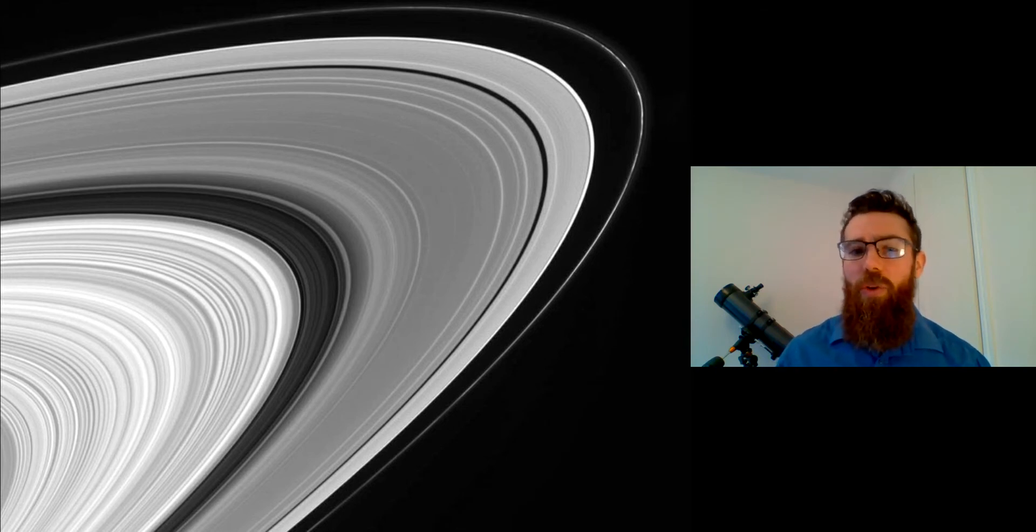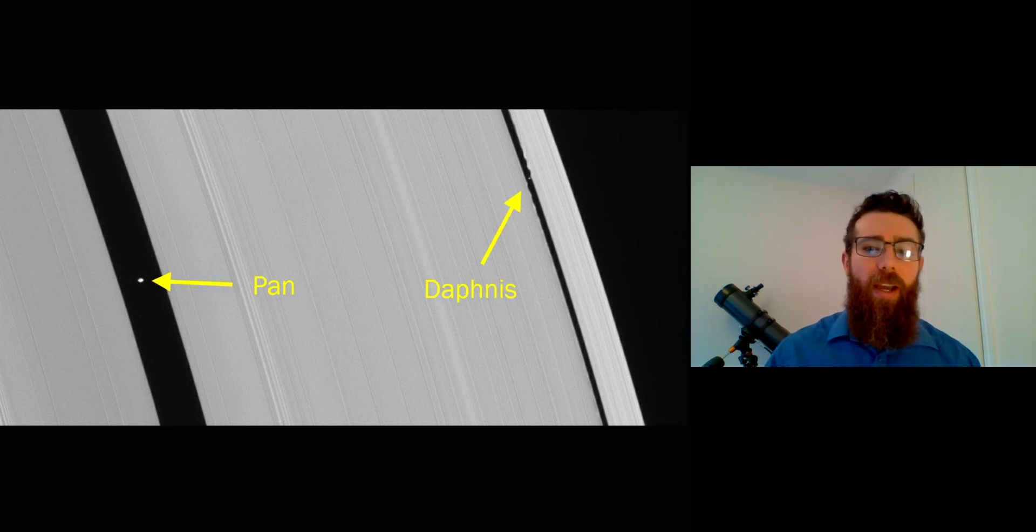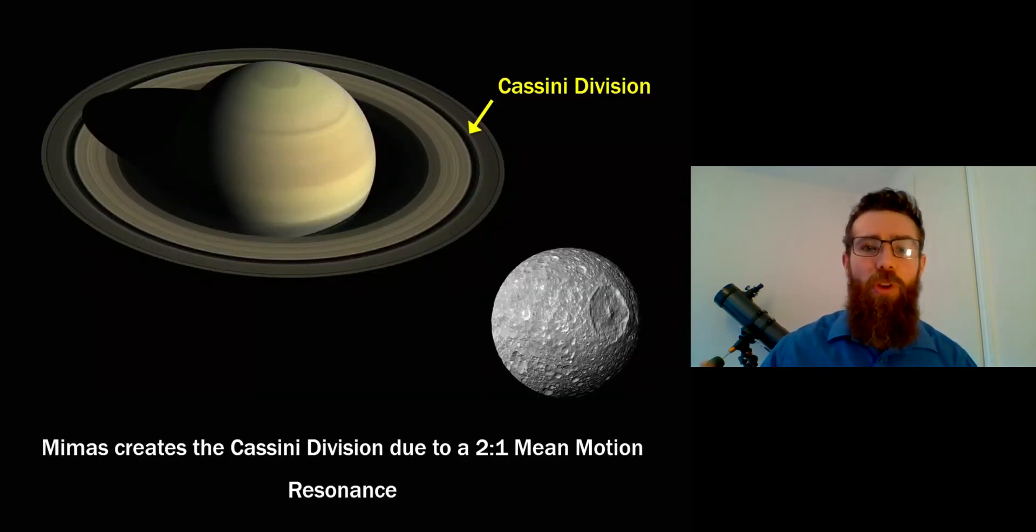So what's actually causing them? Well one reason or one possibility is that you actually have moons inside the rings. Now we did have a video where we actually looked at those moons inside the rings which you can have a look at if you click on the top. That's one scenario but you can actually get a gap if you don't have a moon inside the ring. So one scenario here is if you have a moon orbiting outside of the ring and you get an orbital resonance.